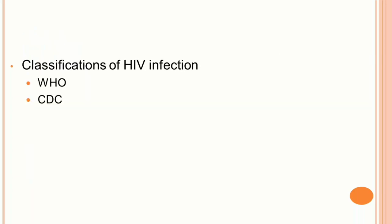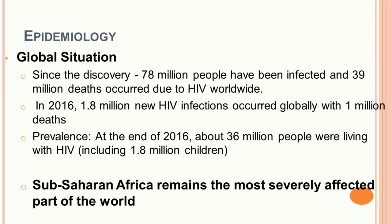WHO and CDC have given different classifications of HIV infection based on clinical stages. Regarding global epidemiology, since discovery, 78 million people have been infected and 39 million deaths have occurred due to HIV worldwide. In the single year 2016, 1.8 million new HIV infections occurred globally with 1 million deaths. At the end of 2016, about 36 million people were living with HIV, including 1.8 million children. Sub-Saharan Africa remains the most severely affected region.